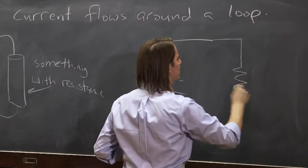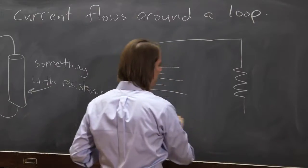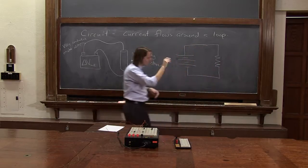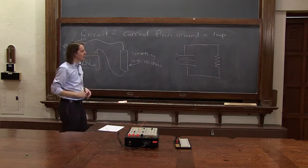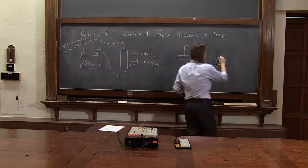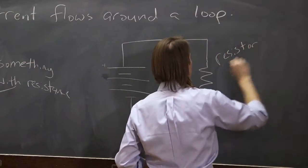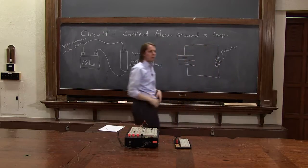And then you come down and your resistor is a squiggly line like that. Not squiggly, but it's actually a zigzag line. So this is the resistor. This is the thing with resistance.